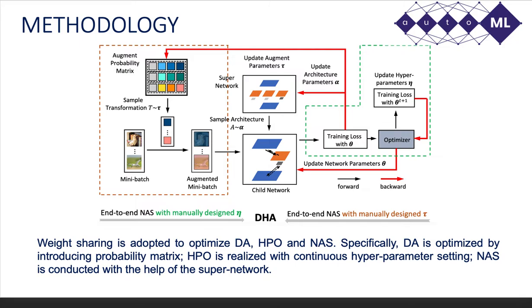Specifically, DA and HPO are regarded as dynamic schedulers which adapt themselves to the update of network parameters and network architecture. At the same time, the end-to-end NAS optimization is realized in a differentiable manner with the help of a sparse coding method. Instead of performing over-search in a high-dimensional network architecture space, we optimize a compressed, lower-dimensional feature space. With this differentiable manner, DHA can effectively deal with higher search space and high optimization complexity caused by a joint optimization problem.